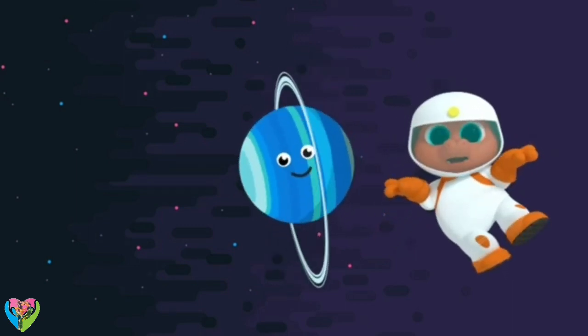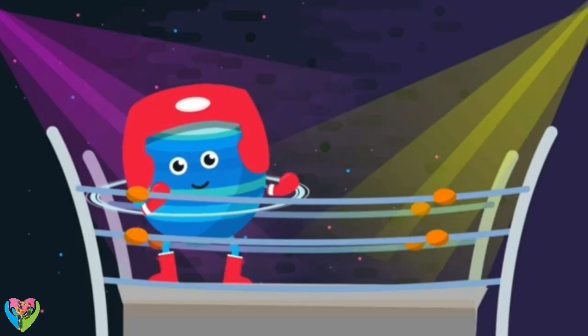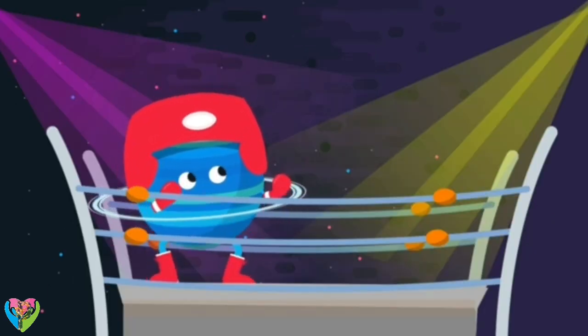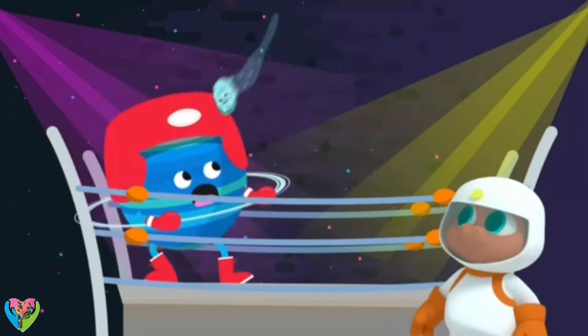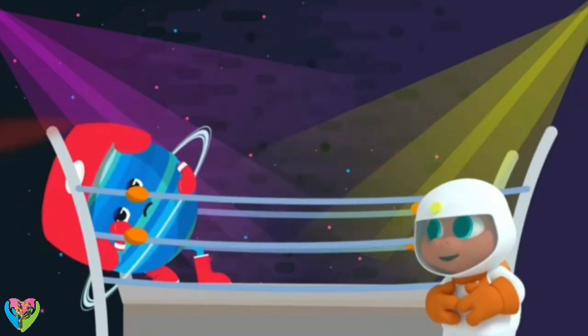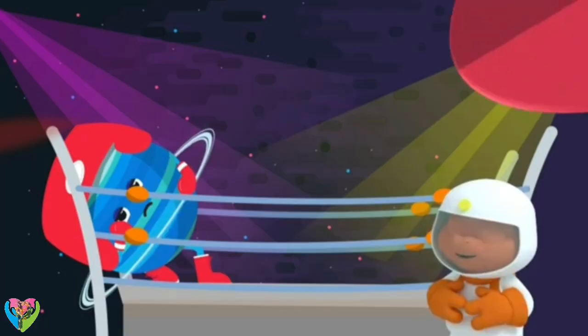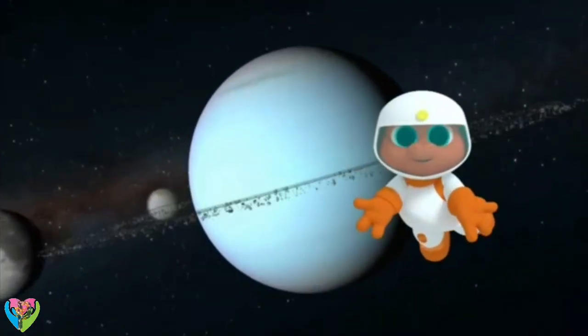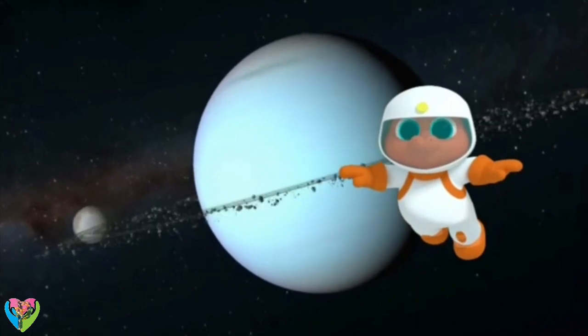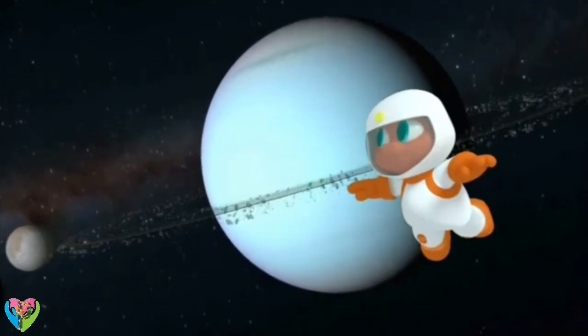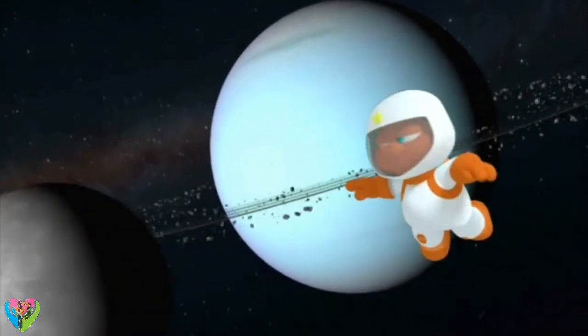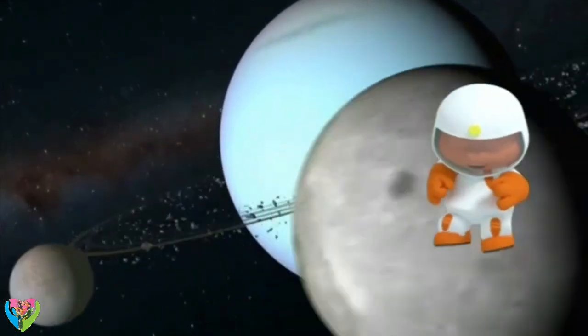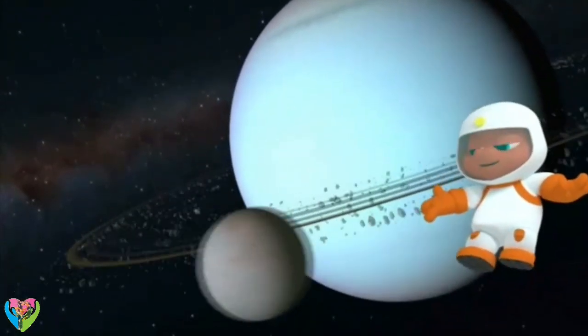But how did that happen? Scientists think Uranus might have been knocked onto its side by many impacts with space objects. Look! It has moons! Uranus has at least 27 moons orbiting it and 13 rings. It's a very busy planet.